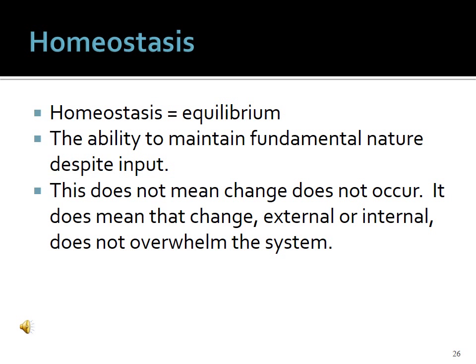Homeostasis equals equilibrium — the ability for a system to maintain its fundamental nature despite input. This does not mean that change does not occur, but that change, external or internal, does not overwhelm the system. Systems seek homeostasis; that is one reason why persons in abusive relationships have difficulty leaving. Systems struggle, sometimes in vain, to maintain sameness. Chaos theory is a derivative of systems theory dealing with systems overwhelmed by input and forced out of equilibrium. A crisis could be considered a situation in which a system is overwhelmed by events and unable to remain stable.